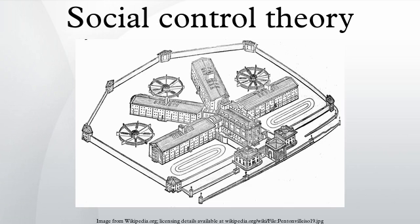Indirect, by identification with those who influence behavior — say because his or her delinquent act might cause pain and disappointment to parents and others with whom he or she has close relationships. Control through needs satisfaction: that is, if all an individual's needs are met, there is no point in criminal activity.